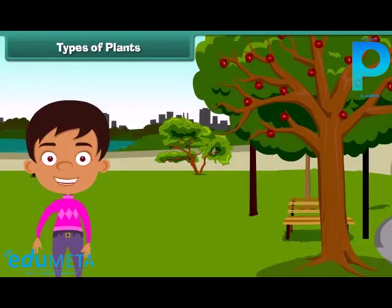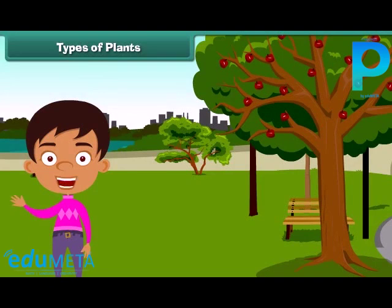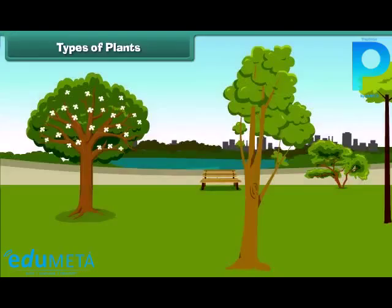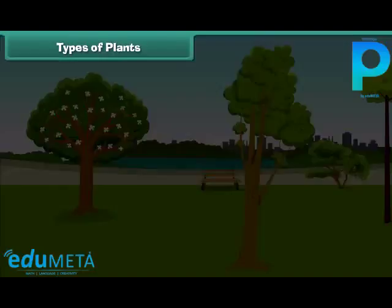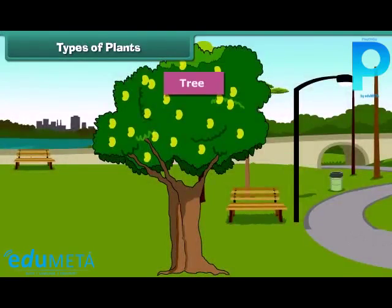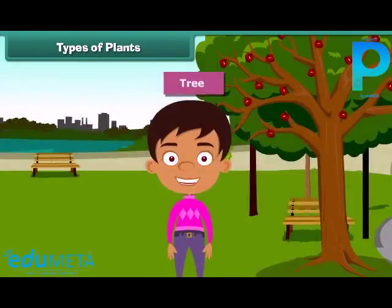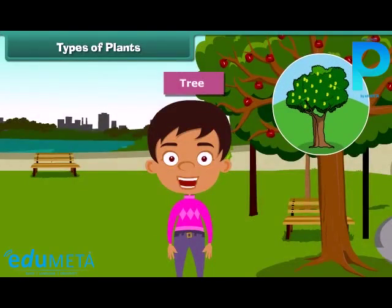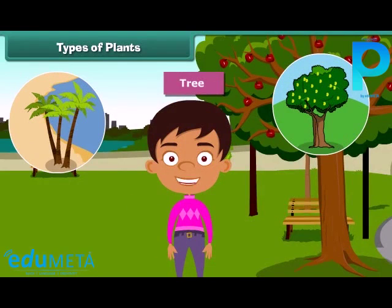Children, we often see different types of plants around us. We find that some of the plants are tall while some are small. Plants which are very tall and strong are called trees. For example, mango tree, coconut tree, and neem are tall.